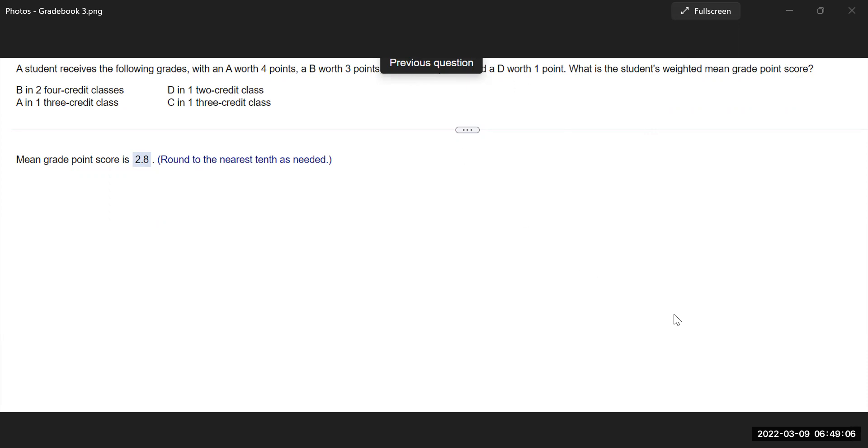Okay, so for this problem, you really need to pay attention to how you can create a table with these things. So B in two four credit classes, A in one credit class, D in one two credit class, and then C in one three credit class. So you have to pay attention. Now you can pause the video and try your hands on the problem.